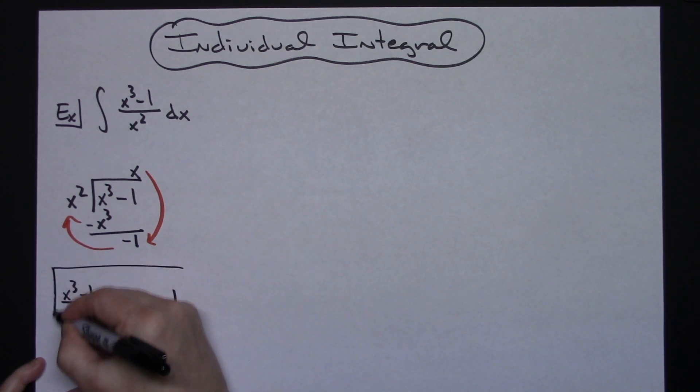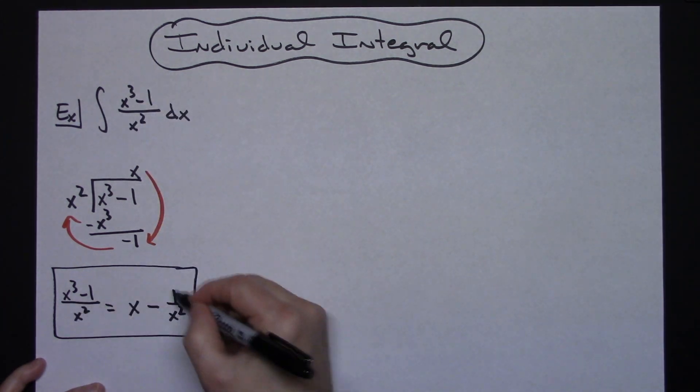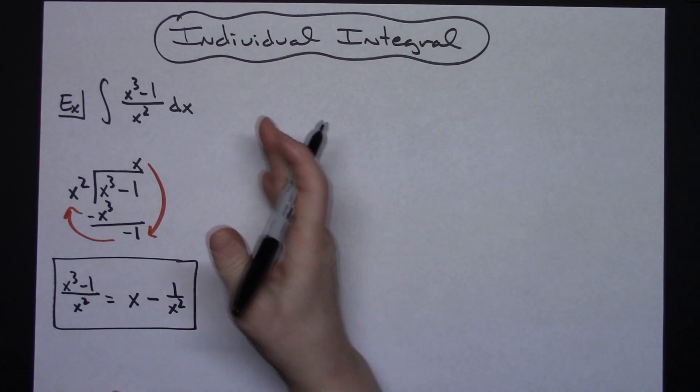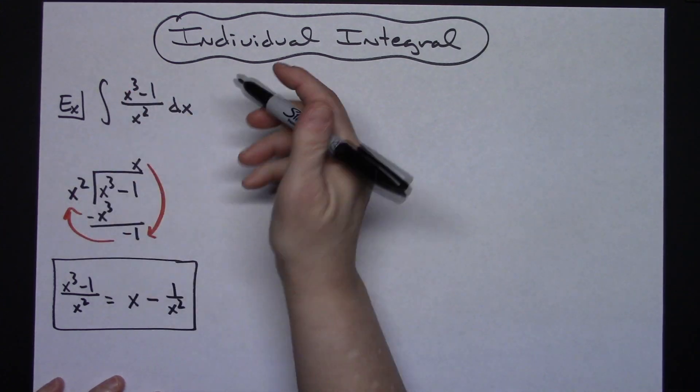That's our key there. What we're doing is just taking this polynomial and breaking it up into two, so that we can rewrite this expression.